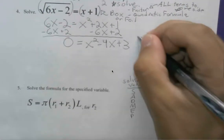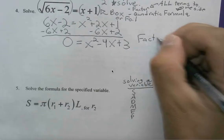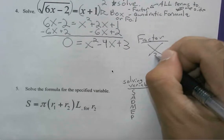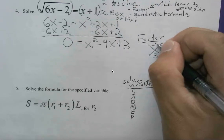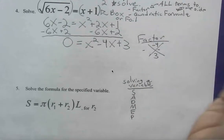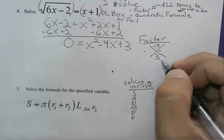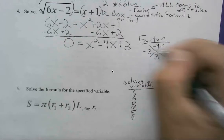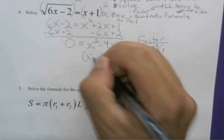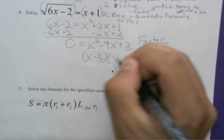So we're factoring to solve. We set up diamond method. We're looking for a product of 3 and a sum that's negative. Since our product is positive, our terms are going to have to be negative and negative. 3 is a prime number. So the factors here are 3 and 1. So we can rewrite this as x minus 3, x minus 1.